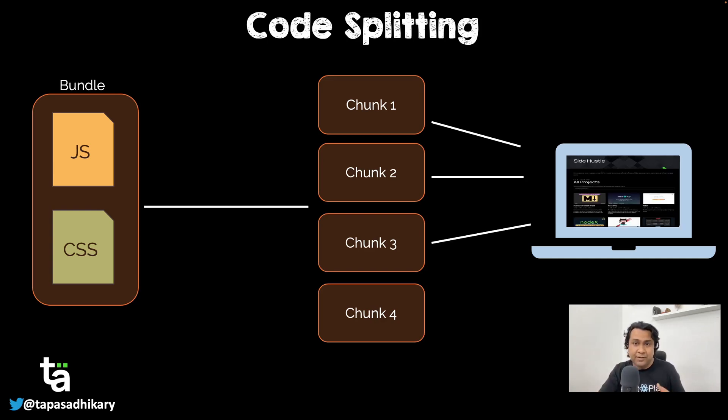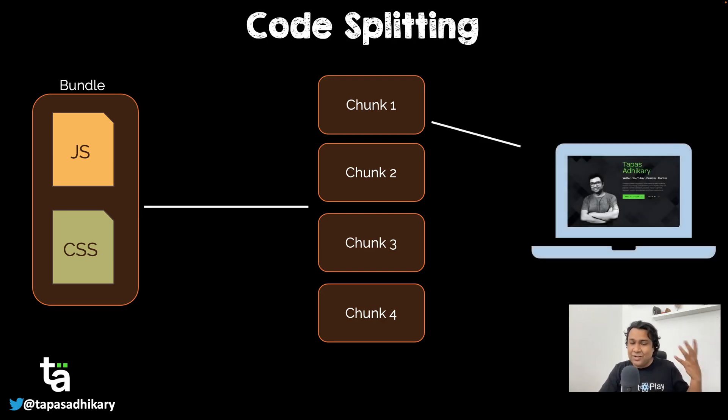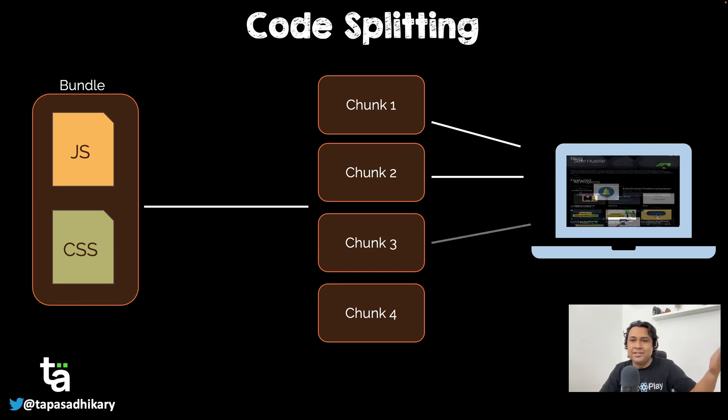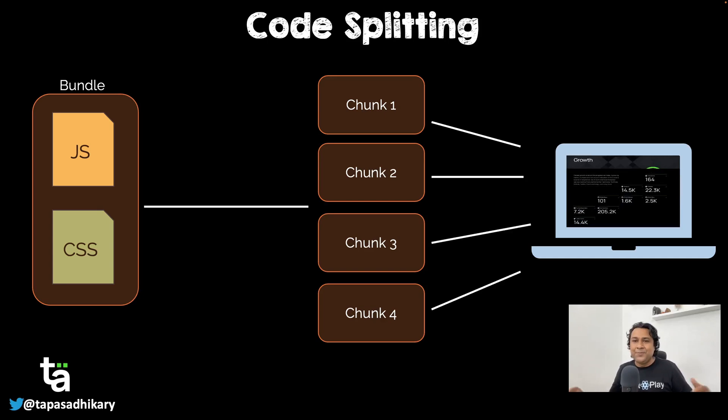That's what code splitting is about. Instead of loading the entire bundle, you split it into chunks and load only what's needed. As a developer, it's up to you to decide how to split it — I'll teach you that in the next video. The customer gets their web page from the relevant chunk without loading all other chunks. Once they navigate, other chunks can be loaded on demand. That's the main concept. If you've understood this concept, it will be very easy to understand how dynamic imports work, and how Suspense and lazy work under the hood in React. Concept is always ahead of syntax — you can google syntax anytime, but understanding code splitting conceptually is what makes it all click.